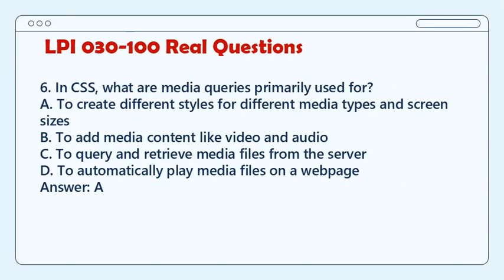Question 6. In CSS, what are media queries primarily used for? A. To create different styles for different media types and screen sizes. B. To add media content like video and audio. C. To query and retrieve media files from the server. D. To automatically play media files on a web page. Answer: A.